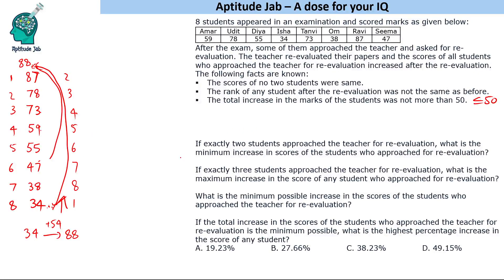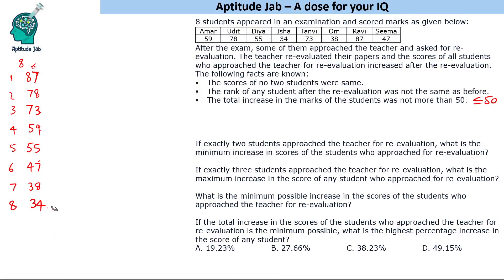The first question asks: if exactly two students approach the teacher, what is the minimum increase in scores? One person must be the last-place student since their rank has to change. Let's say this person increases to 39 — an increase of 5. The second person should go just above the rank-1 student.